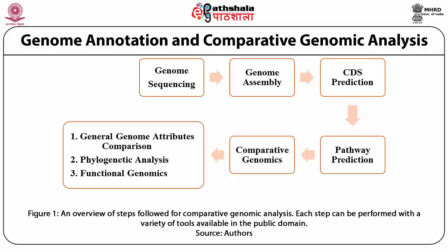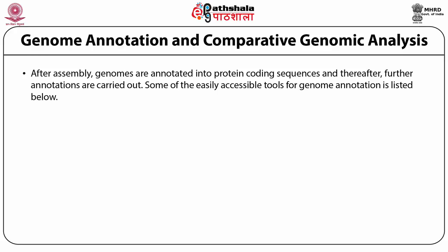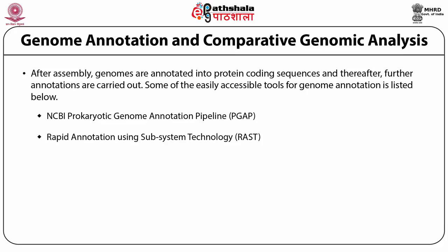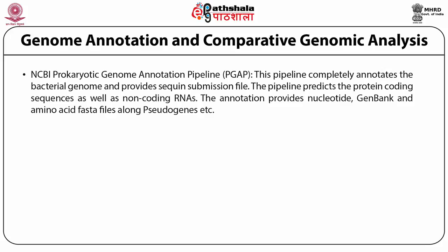The comparative genomic analysis involves three major things: first, general genome comparison, which involves comparison of the normal attributes or features of the genome; second, phylogenetic analysis; and third, functional genomics. After assembly, genomes are annotated into protein coding sequences, and thereafter further annotations are carried out. Some of the easily accessible tools for genome annotation include the NCBI prokaryotic genome annotation pipeline known as PGAP, RAST (rapid annotation using subsystem technology), RAST finder 2.1 for acquired antimicrobial resistance gene finding, cluster of orthologs (COG) analysis, OrthoMCL, and the KEGG automatic annotation server known as KAAS.